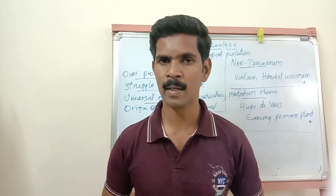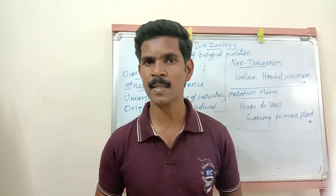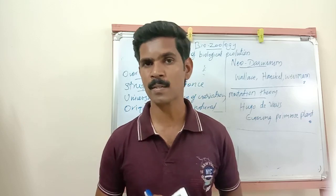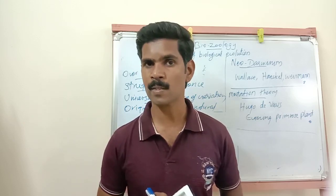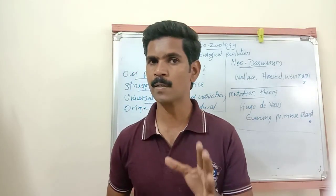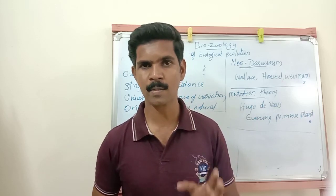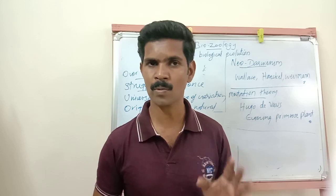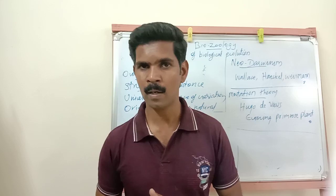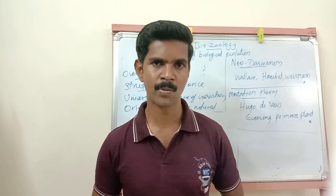Today we have completed five important theories of biological evolution: Lamarckism, Neo-Lamarckism, Darwinism, Neo-Darwinism, and the Mutation Theory. There are also two-mark, three-mark, and five-mark questions from this lesson. Try to complete today's lesson and send your answers in the next class.